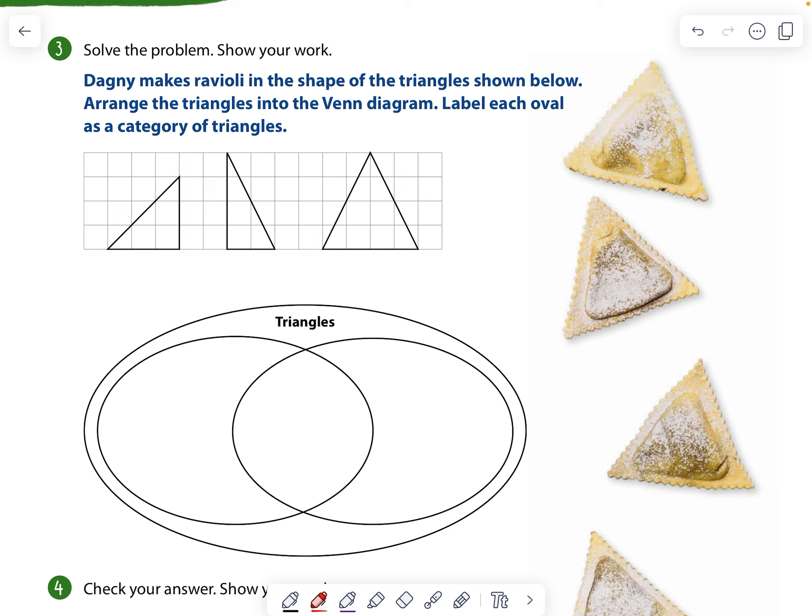Okay. We're going to skip to this one. Dagny makes ravioli in the shape of triangles shown below. Arrange the triangles into the Venn diagram. Label each oval as a category of the triangles. Okay. So if I look, this one has a right angle and this one has a right angle.